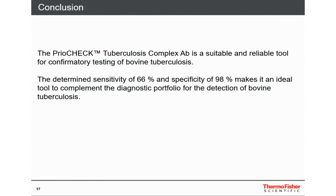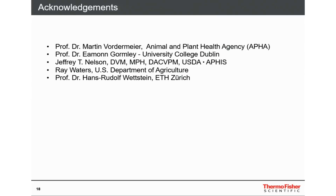In conclusion, the Prionics BM tuberculosis complex antibody ELISA is a suitable and reliable tool for confirmatory testing of bovine tuberculosis. The determined sensitivity of 66% and specificity of 98% makes it an ideal tool to complement the diagnostic portfolio for the detection of bovine tuberculosis. I have some acknowledgments on the last slide — if I forgot somebody, I apologize.